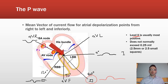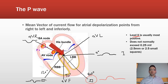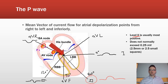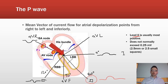When assessing P wave amplitude, it does not normally exceed 0.25 millivolts — that's two and a half millimeters, or two and a half small squares, which is half of one large box.